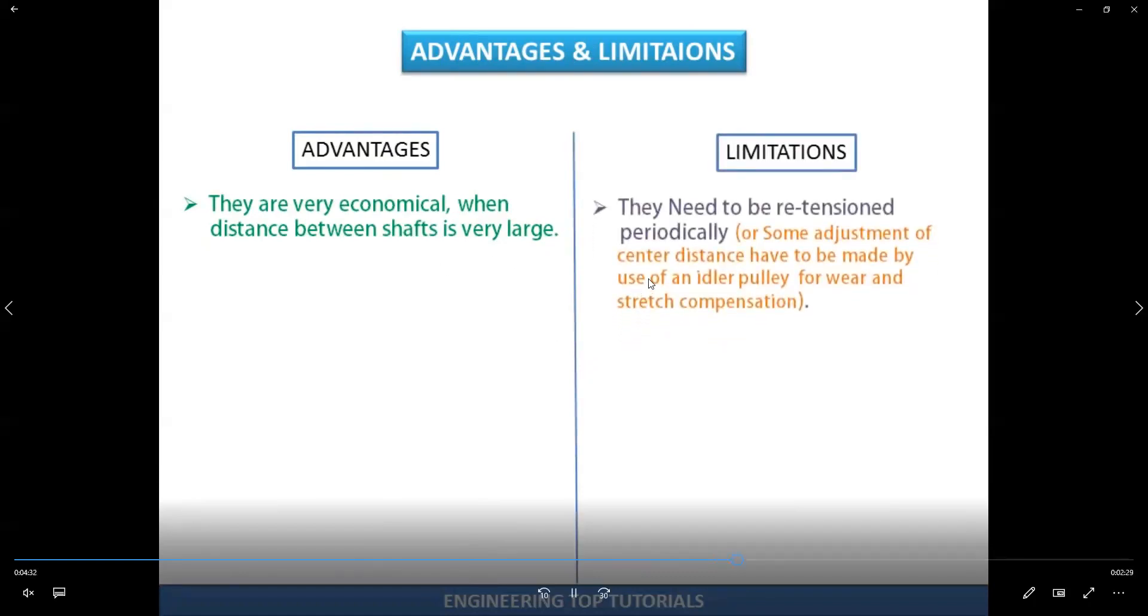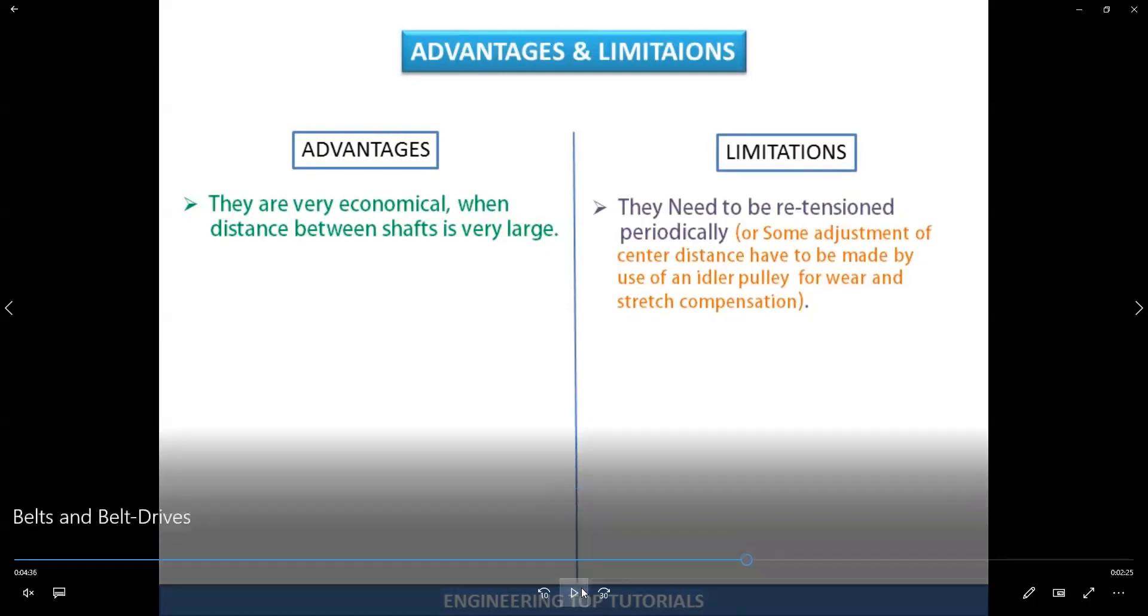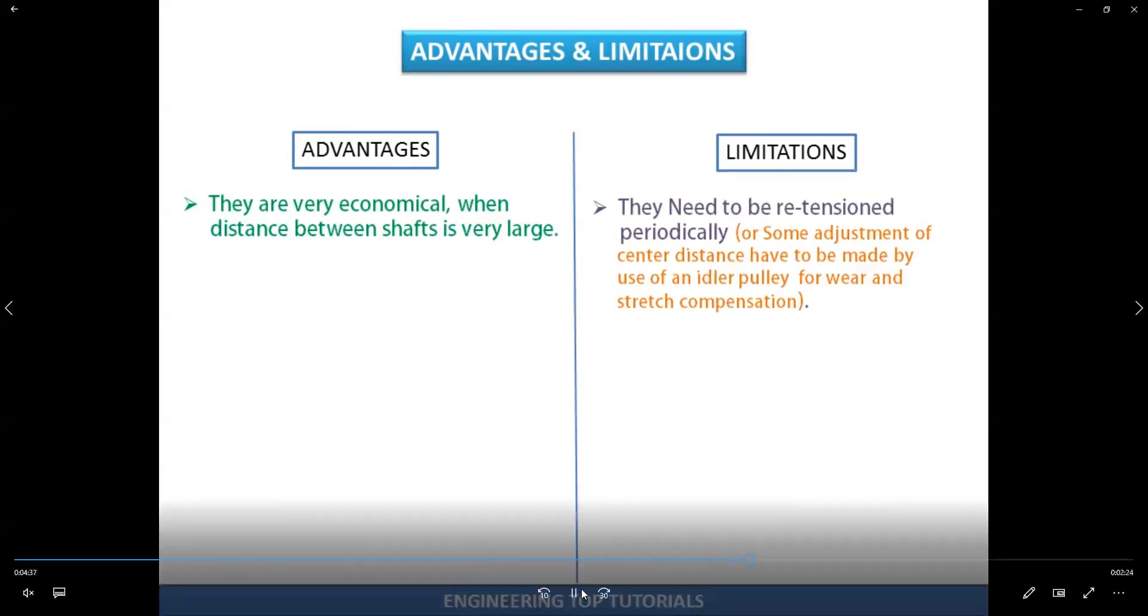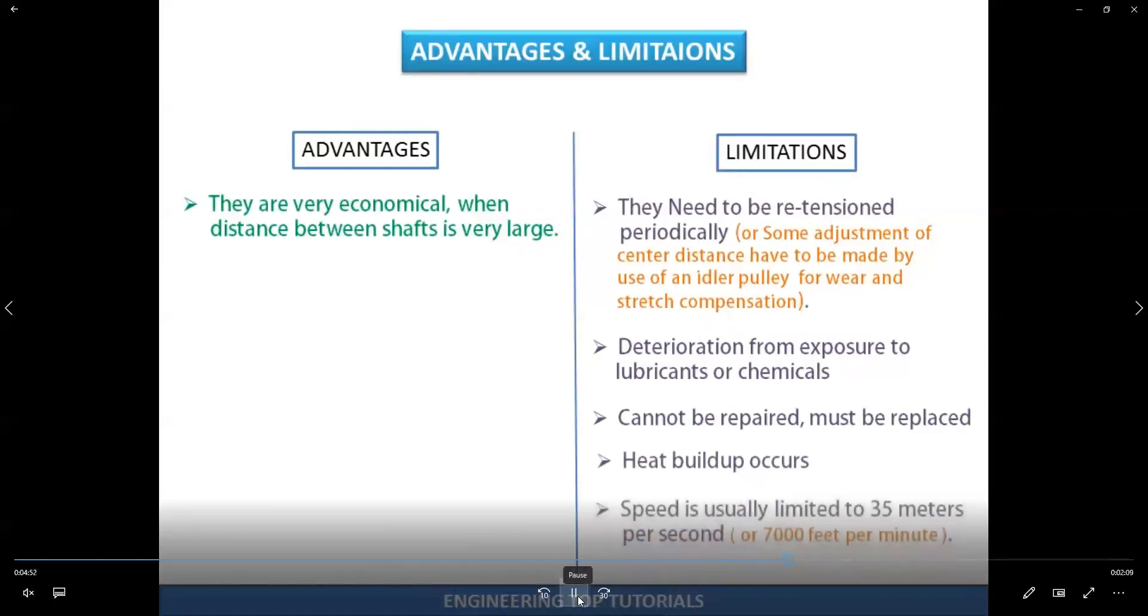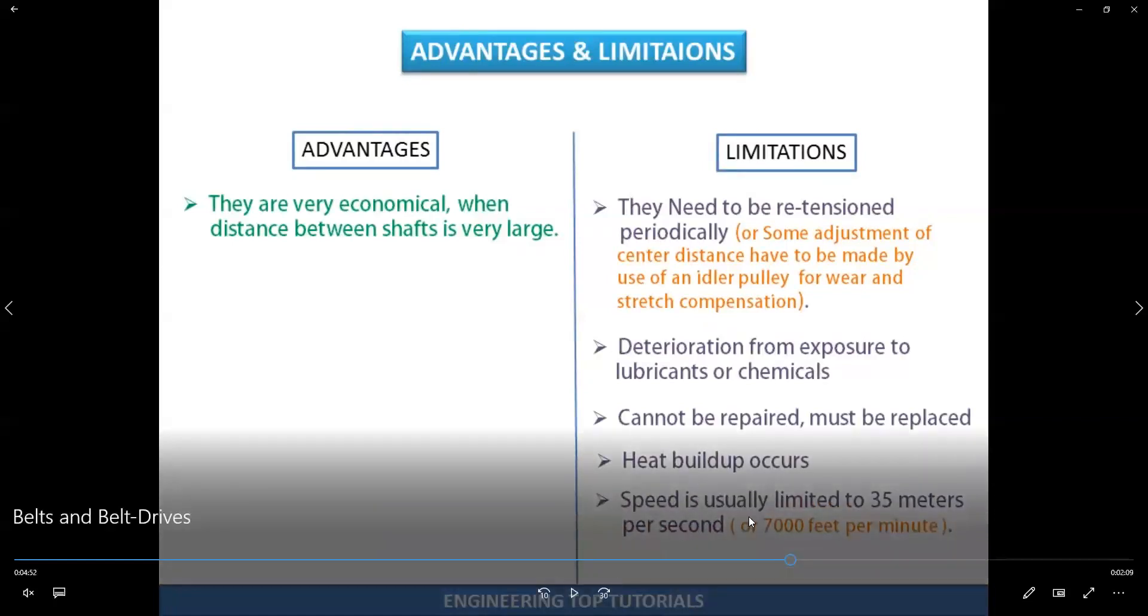Belts need to be retensioned periodically because it's rubber, so you need to make it tight after using for some time. Exposure to chemical or oil will spoil the belt. Once spoiled, you cannot repair it, you must change the whole part. The speed is usually limited to low speed, 35 meters per second.